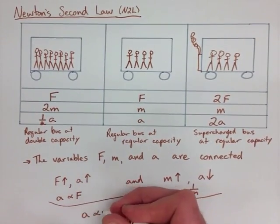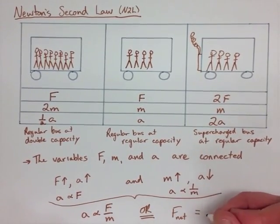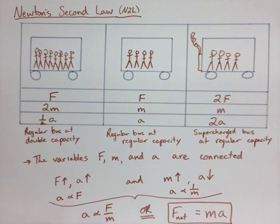From all of this, we can say that A is proportional to F over M, or we can rearrange it to say force net is equal to MA. This is probably the most powerful formula that you're going to use in physics in high school. You're going to need to get used to using it and seeing it in different ways. In words, we can say an object will accelerate proportionally to the net force that's being applied to it, but inversely proportionally to its mass.